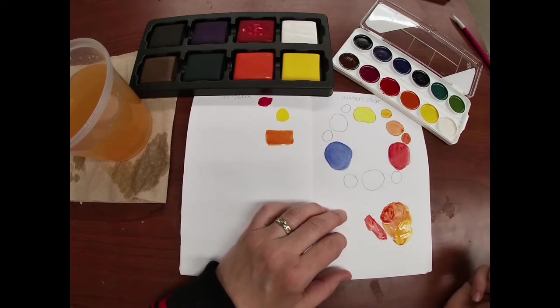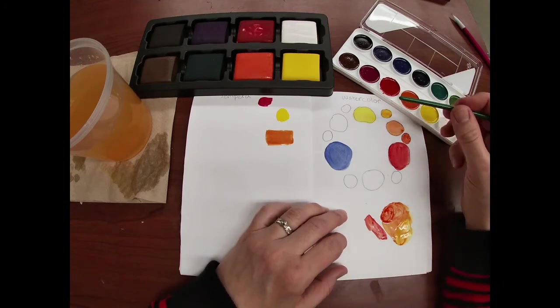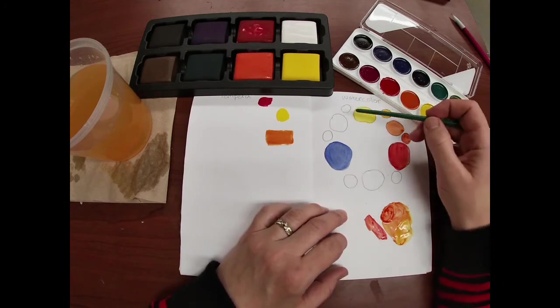It should look like it's changing gradually from one color to the next. And then I'm going to do the same thing with my purple side and my green side.